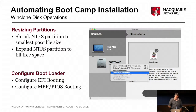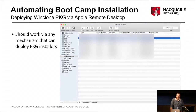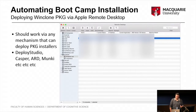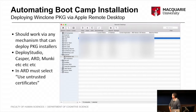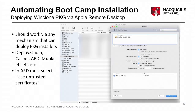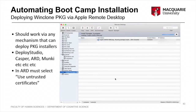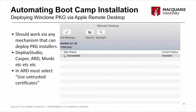One of the tools we use quite a bit is Apple Remote Desktop. These packages should work via any deployment mechanism that supports package installers — Deploy Studio, Casper, Munki can all do this. When using Remote Desktop, these packages aren't signed, so you have to tell it to use untrusted certificates. The package transfers through Remote Desktop to the target, then executes the post-install scripts, which perform the partitioning and imaging. Then when we reboot, it starts up and kicks off those sysprep scripted tasks we talked about earlier.